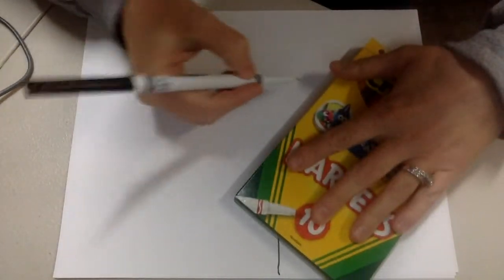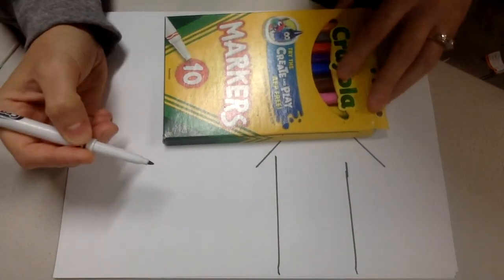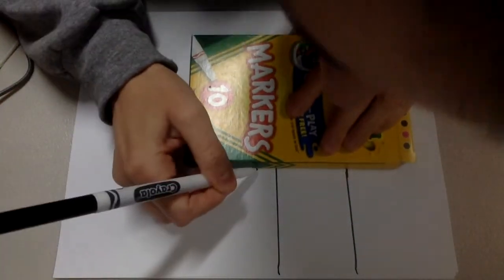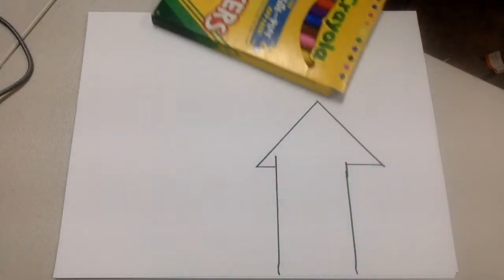That way, if you make a mistake, you can easily erase this. So I'm going in and I am making the style house from one of the slides.